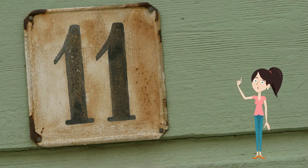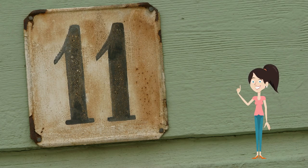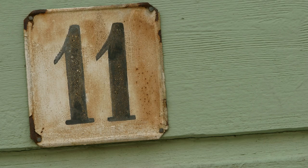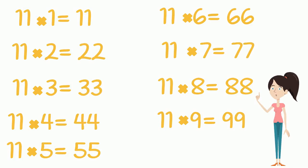If you are multiplying a one-digit number by 11, you just need to repeat that digit. So let's have a look at these examples. For example, 11 times 1 equals 11. You write number 1 and you repeat the same digit.